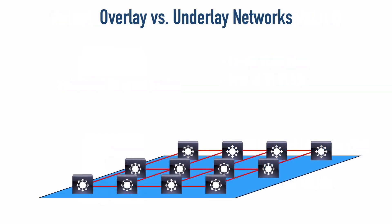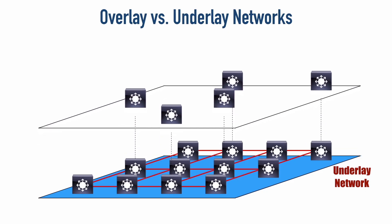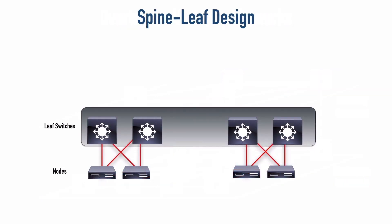The existing physical network infrastructure is referred to as the underlay network. Here we see 12 different switches physically connected, making up the underlay network. But we can create logical tunnels between specific switches to create an entirely different topology. Using that same physical underlay network, we logically create tunnels between select switches to produce a totally different topology — that's our overlay network.